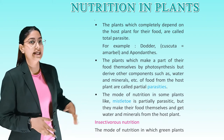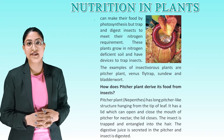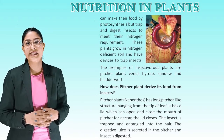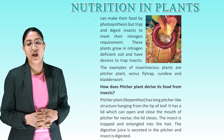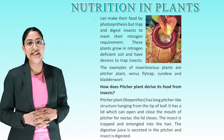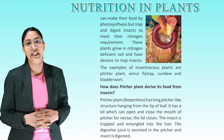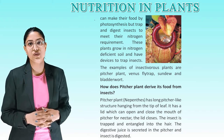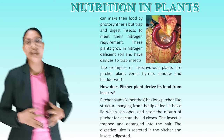Insectivorous nutrition. The mode of nutrition in which green plants can make their own food by photosynthesis but also trap and digest insects to meet their nitrogen requirement is called insectivorous nutrition. These plants grow in nitrogen-deficient soil and have devices to trap insects. Examples of insectivorous plants are pitcher plant, Venus flytrap, sundew, and bladderwort. The pitcher plant (Nepenthes) has large pitcher-like structures hanging from the tip of the leaf. It has a lid which can open and close the mouth of the pitcher. The insect is attracted by nectar, the lid closes, the insect is trapped and entangled in hairs, digestive juice is secreted in the pitcher, and the insect is digested.